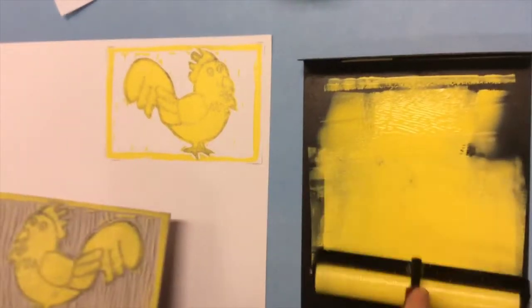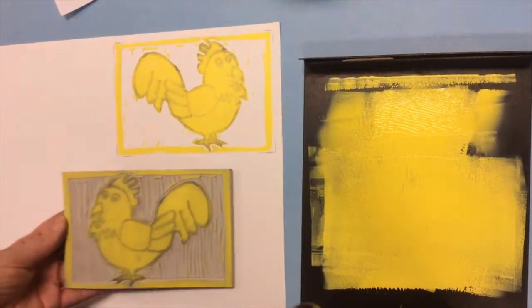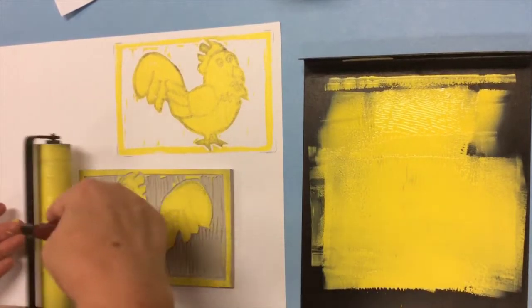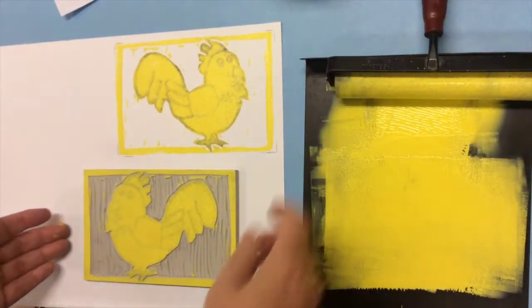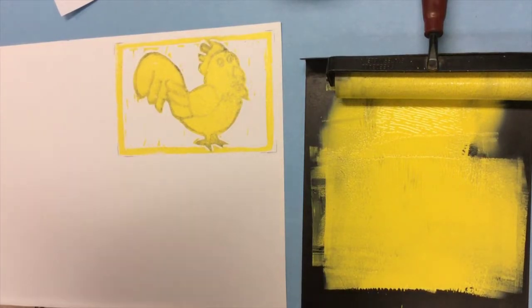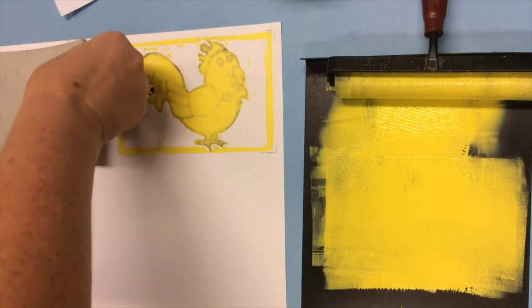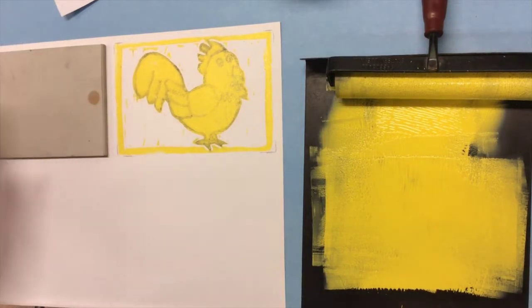Now I'm going to actually ink up the block again because we're going to document all the different steps that we took to make our three colored reduction print. So I'm just going to print it next to this one. I don't need to put the pencil marks on because we're not going to print anything on top of this one. It's just to show the steps that we went through.